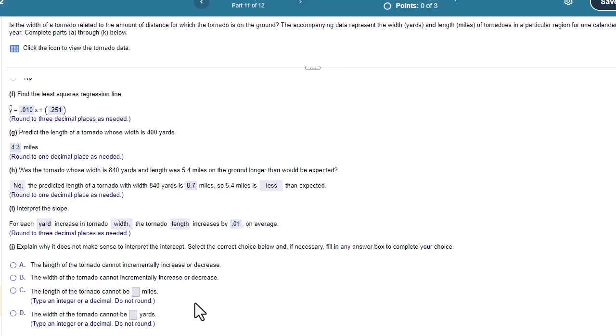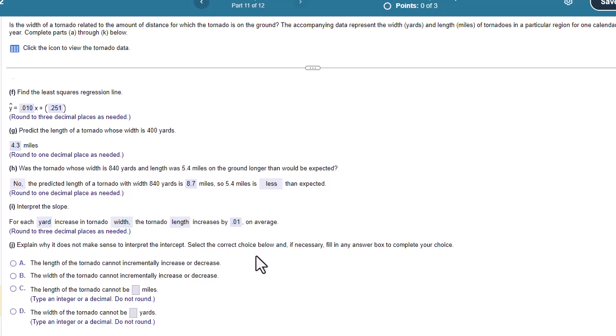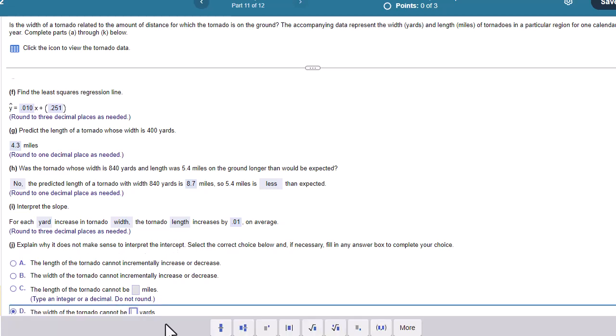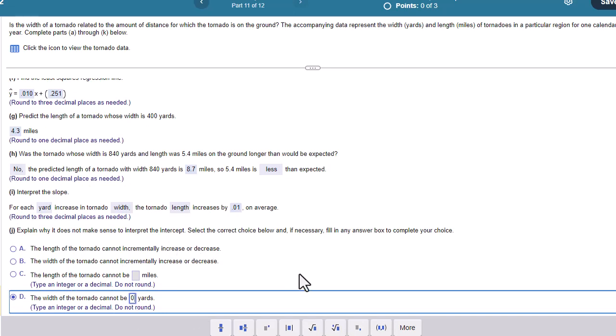Explain why it does not make sense to interpret the intercept. Select the choice below. And if necessary, fill in answer boxes to complete your choice. So what does that y-intercept mean? That y-intercept occurs when x, in this case the width, is 0. So it doesn't make any sense to talk about a tornado with a 0 width. No. A tornado is going to have some width. So it looks like it's going to be this d of 0 yards.